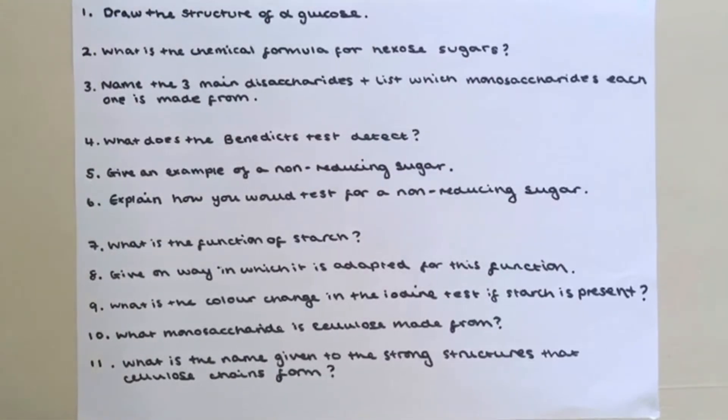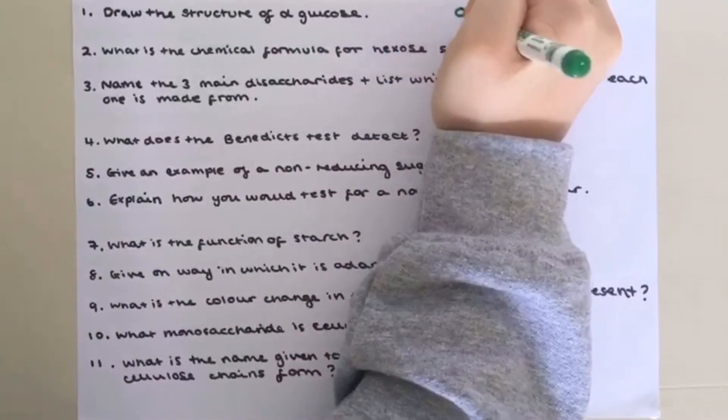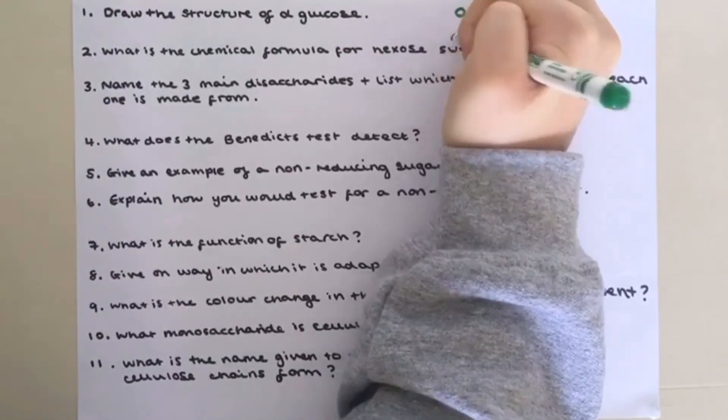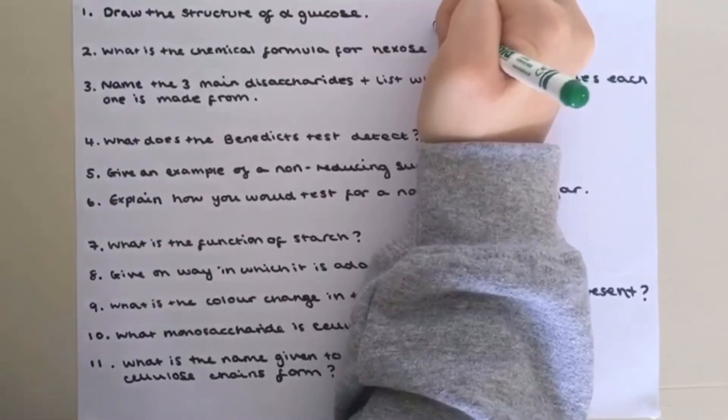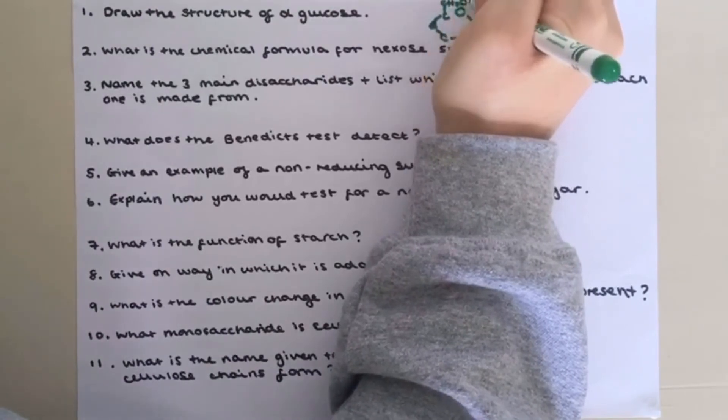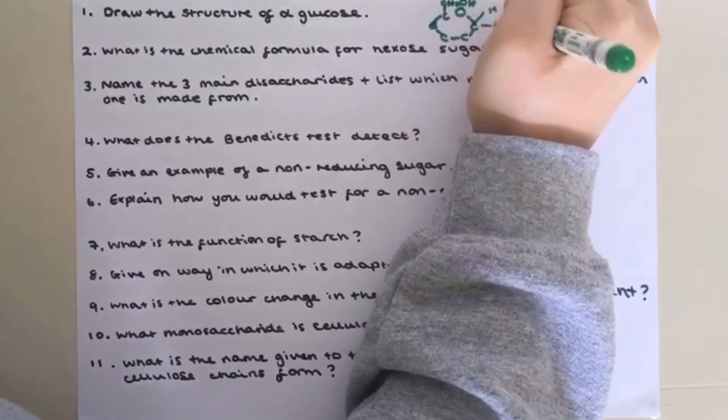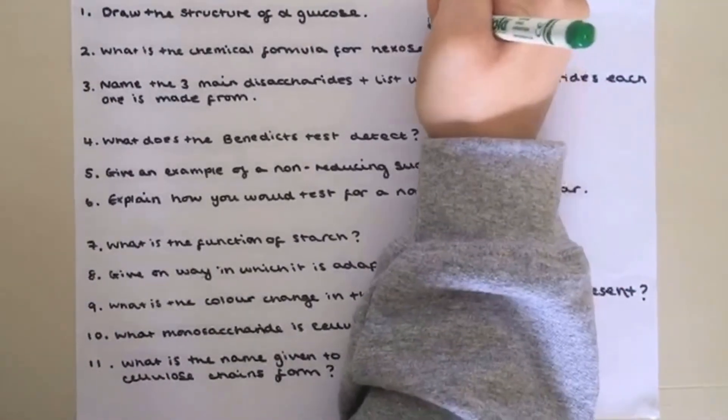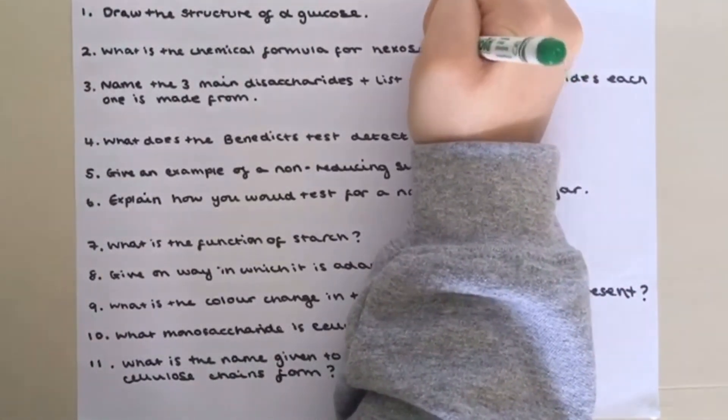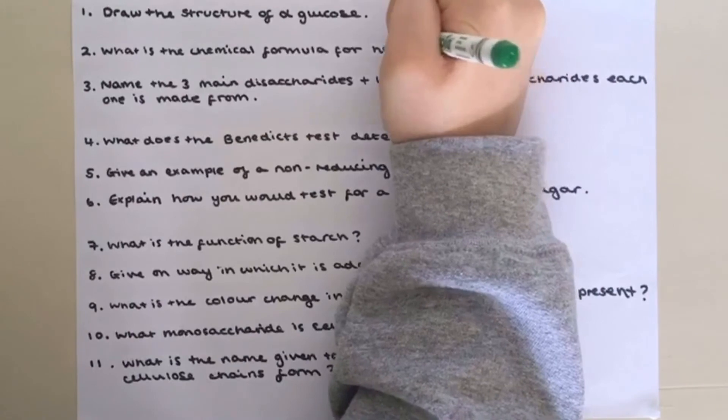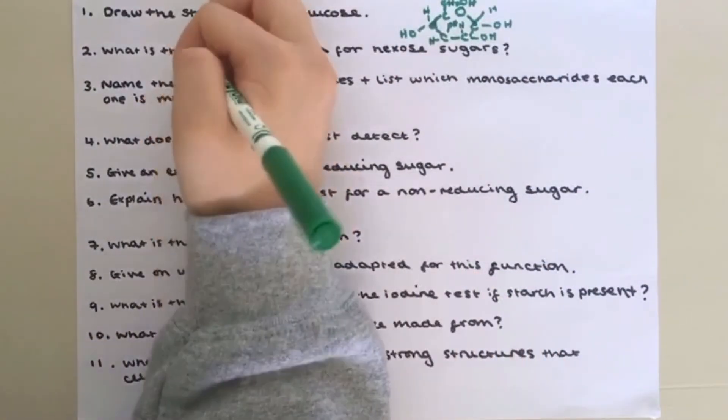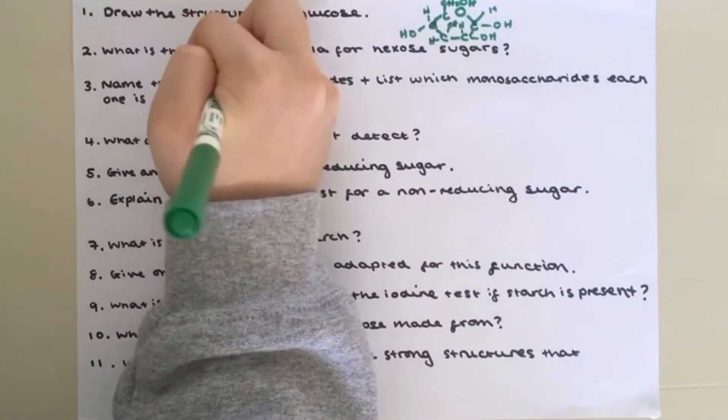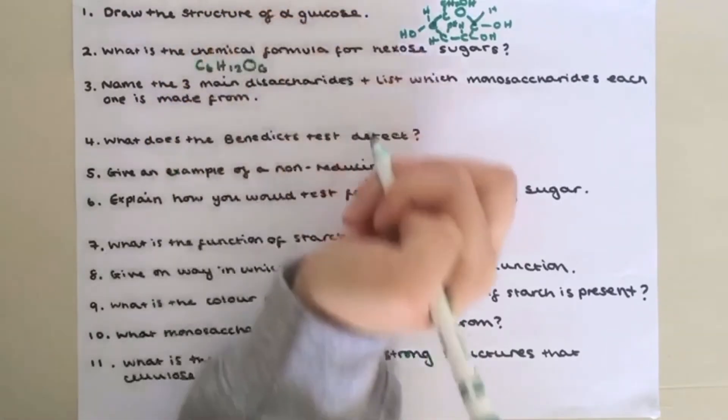Okay so now pause the video and have a go at these questions. Question 1, draw the structure of glucose. I'm sorry it's fairly difficult to see here, I had to squish it in the top. Question 2, what is the chemical formula for hexose sugars? It's C6H12O6.